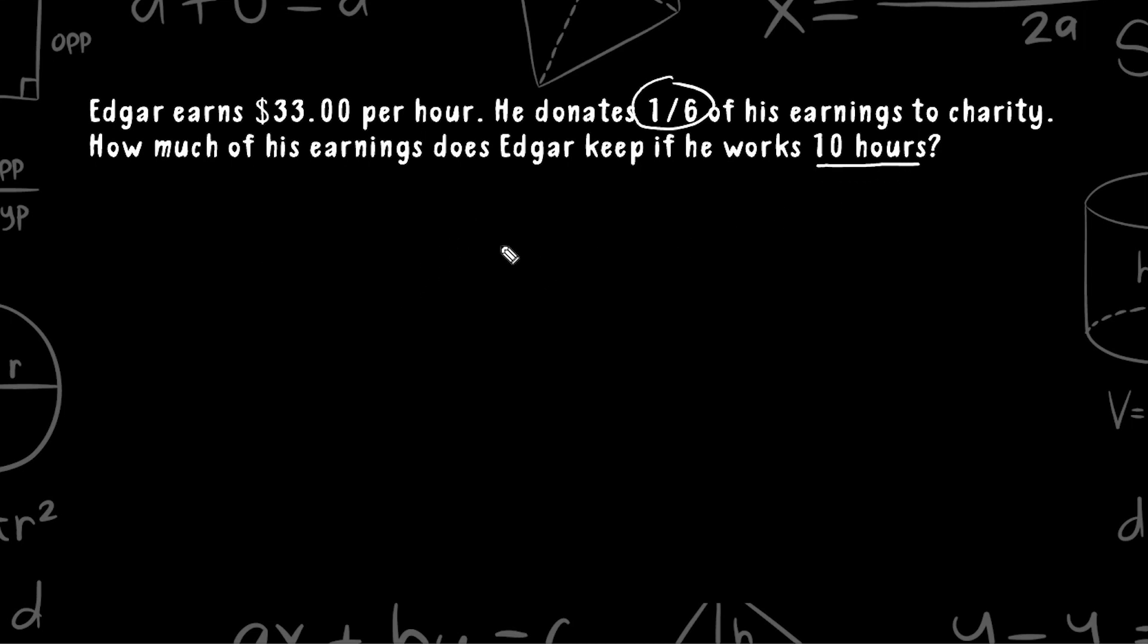So the problem states that 1 sixth of his earnings goes to charity. But the question is asking, how much does Edgar keep for himself? The amount he donates and the amount he gets to keep must add up to be one whole or his entire earnings. So the amount he gets to keep for himself would be 5 sixths of his entire earnings.